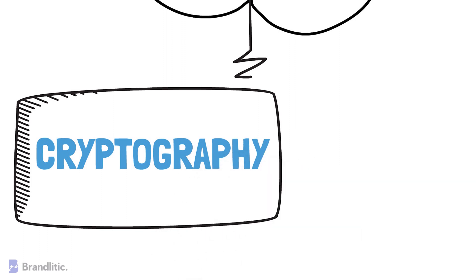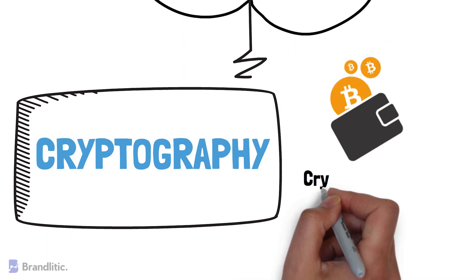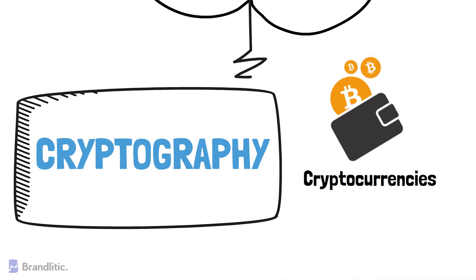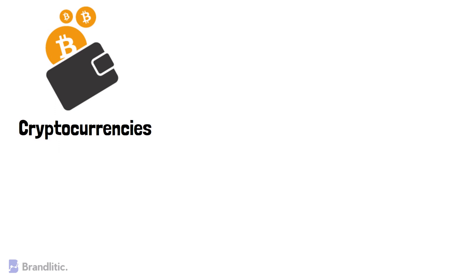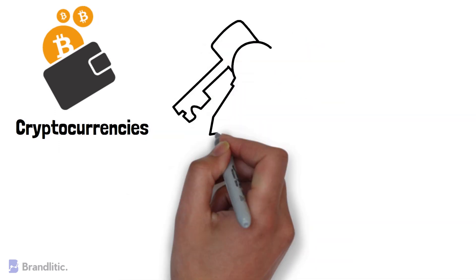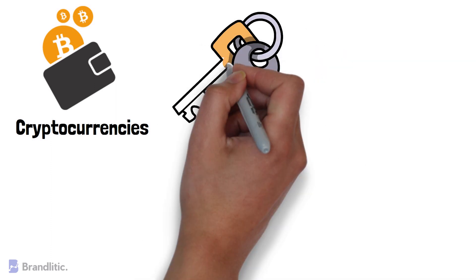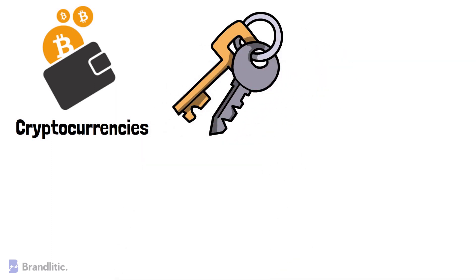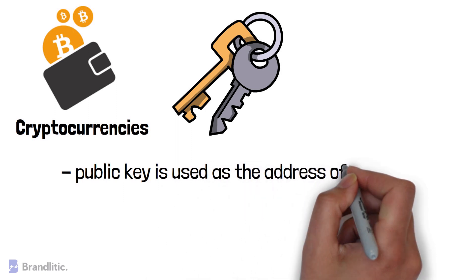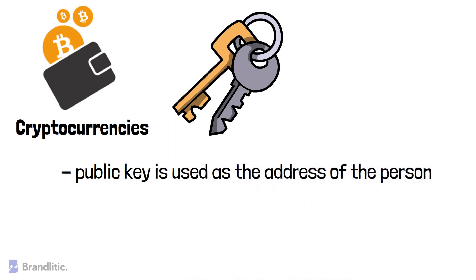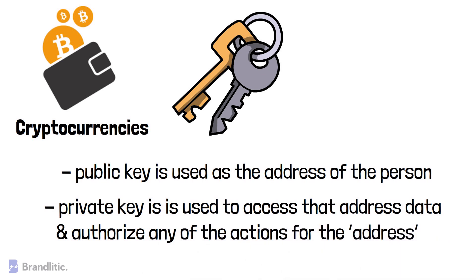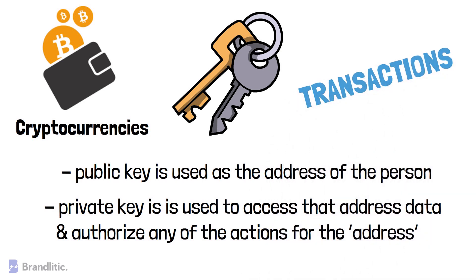One of the major real-world applications is cryptocurrency. Cryptocurrencies are one of the major applications of blockchain, and they use public-private key pairs to maintain the addresses of users on the blockchain. The public key is used as the address of the person and is visible globally to any participant, while the private key is the secret key value used to access their address data and authorize actions for the address — generally referred to as transactions in cryptocurrency language.